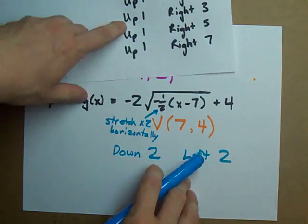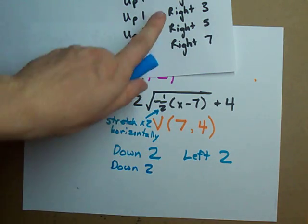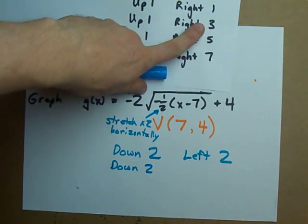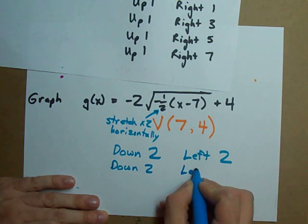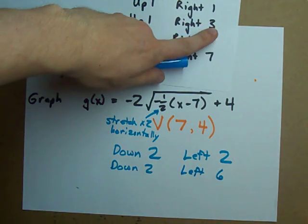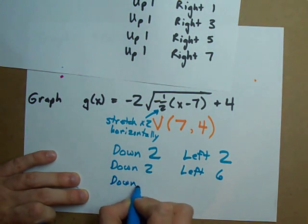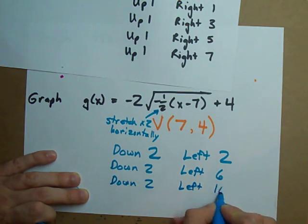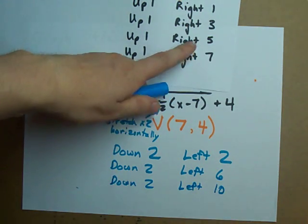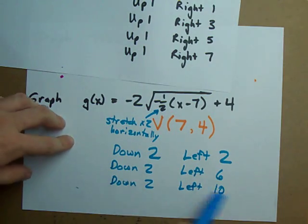Just like if it was negative two here you'd be compressing it horizontally. Anyways up one becomes down two just like it did in the previous step. Right three becomes left six because you flipped the direction and stretched it by two. Go down another two and go left by ten. Switch the direction and stretch by two. We've got our new step pattern.